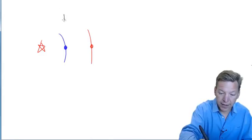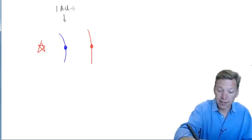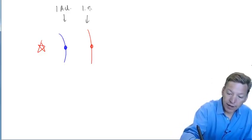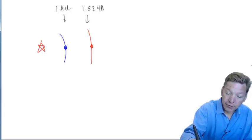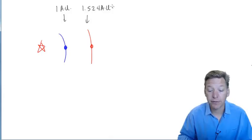The distance from the sun to the Earth, average distance, is defined to be one AU, one astronomical unit. And in these same units, Mars is 1.524 astronomical units. So Mars is about 50% further away than the Earth is.